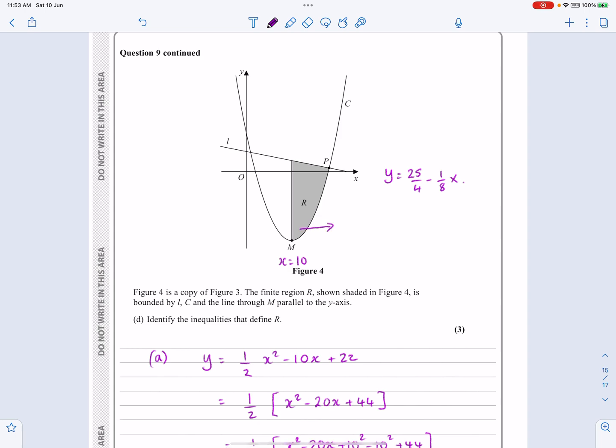So if I want to work out this region here, it's going to be that side of x equals 10. So in other words, x greater than or equal to 10. It's going to be this side of the line. So in other words, underneath the line, less than the line. So it's going to be y less than or equal to 25 over 4 minus an eighth x. And then it's going to be above the curve. So it's going to be y greater than or equal to, it doesn't matter which one you use. I'm going to use the original one that they gave me, half x squared minus 10x plus 22.